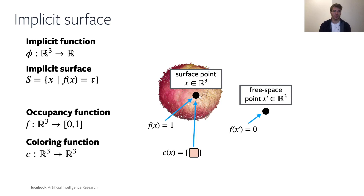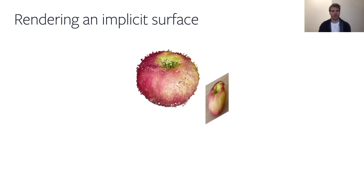While defining the functions F and C is quite straightforward with tools such as PyTorch, rendering a color image of the underlying surface is actually quite a non-trivial task. One of the main functionalities in PyTorch3D is a renderer of such implicit surfaces. I will first describe the main building blocks of a classic implicit function renderer and then show how this is implemented in PyTorch3D.